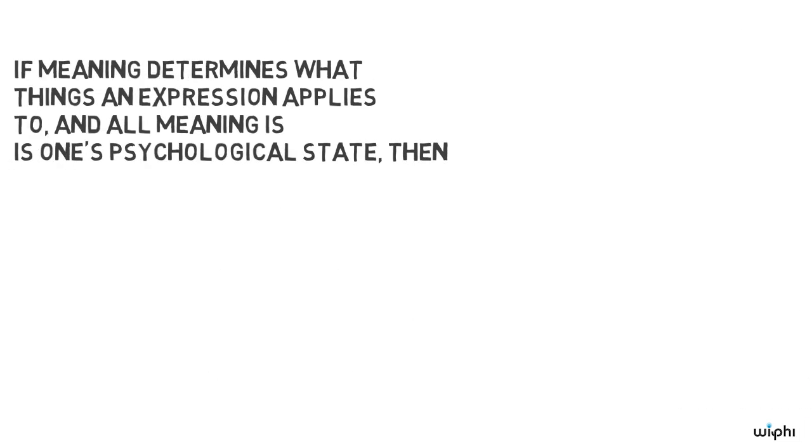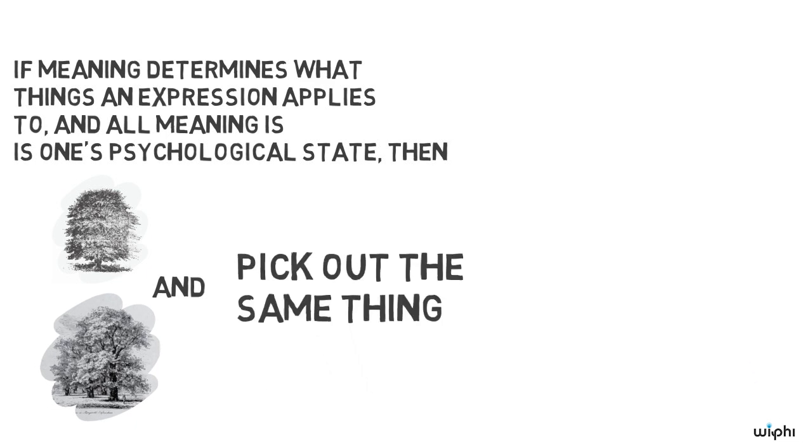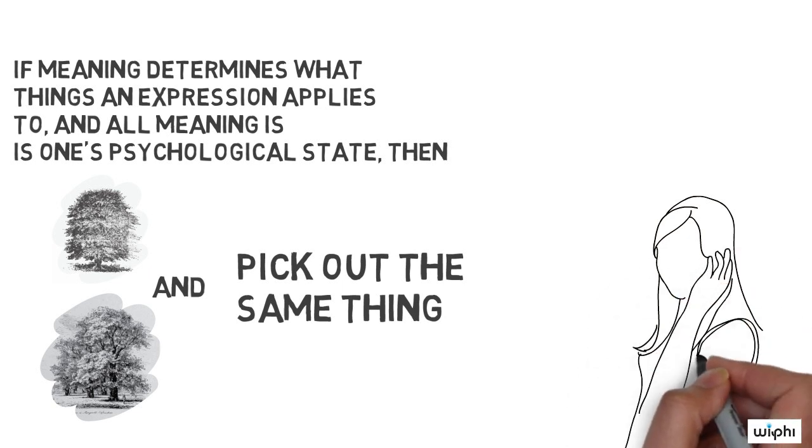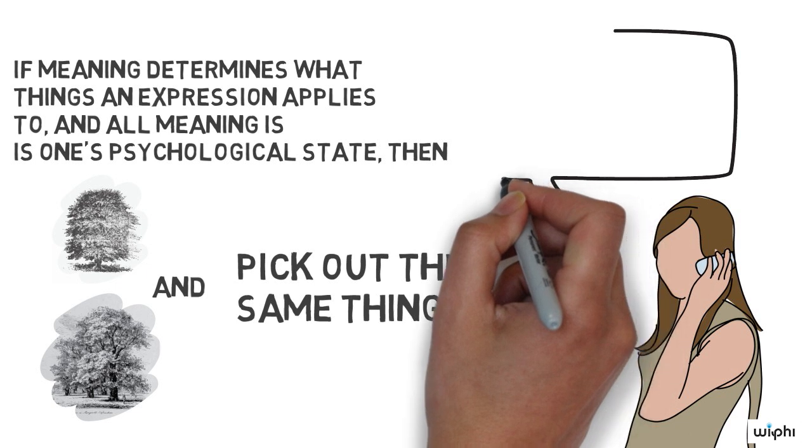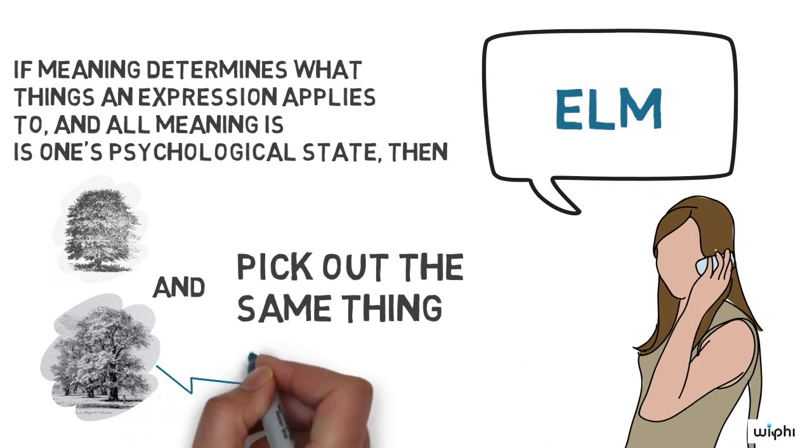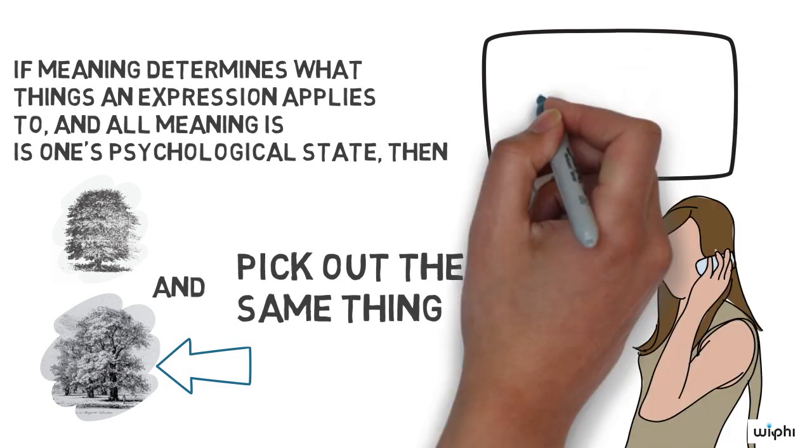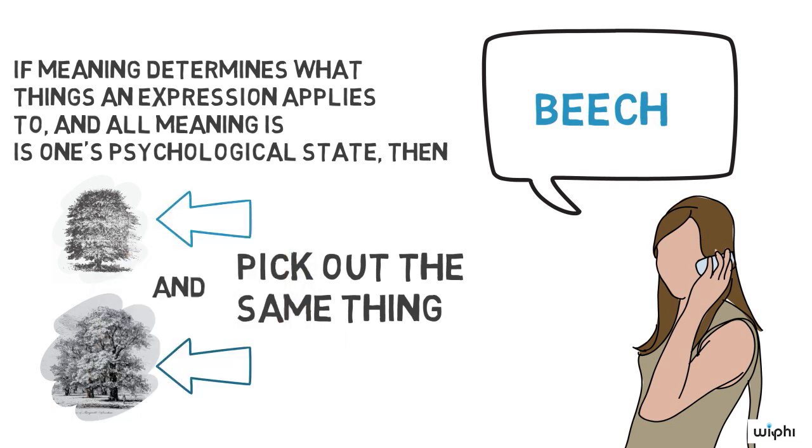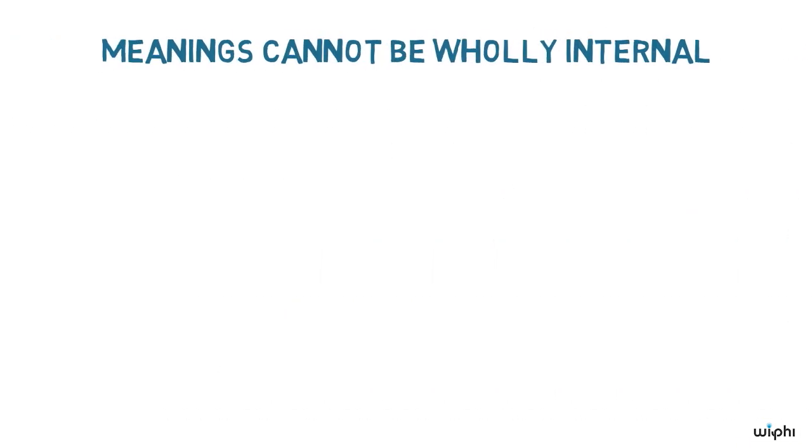So, if meaning determines what things an expression applies to, and all meaning is, is one psychological state, then for me, elm and beach pick out the same thing. I'm in the same psychological state when I think about elms and beaches. But that doesn't seem right. I speak English, and I use elm and beach in the same way as a more informed individual does. It seems when I say elm, I mean elm, and I pick out elms, just like an arborist would. And when I say beach, I mean beach, and I pick out beech trees. So, meanings cannot be psychological states. Meanings cannot be wholly internal.